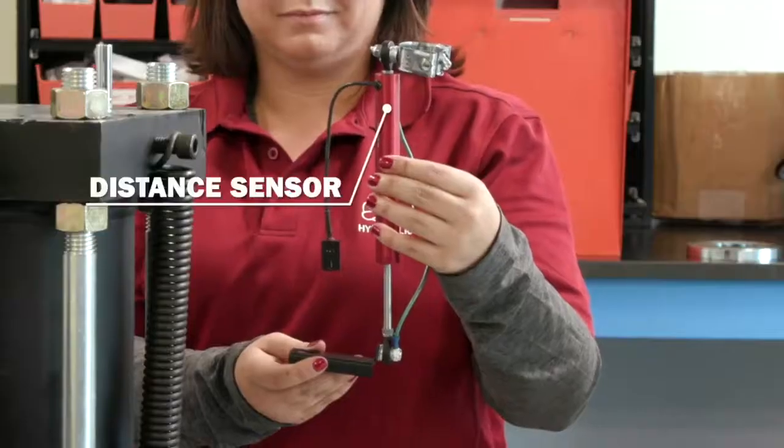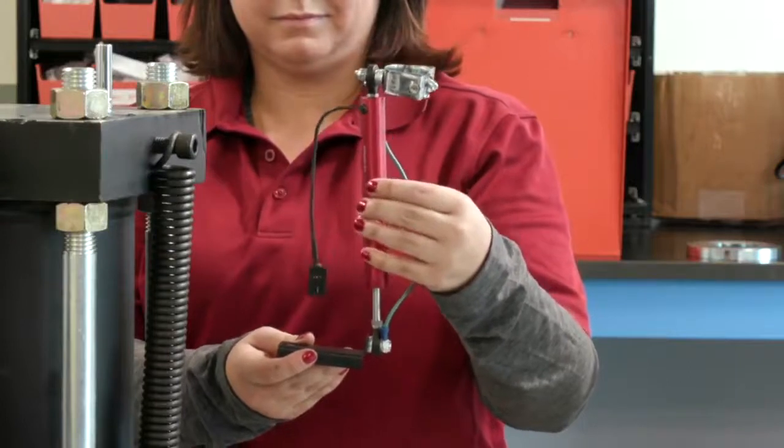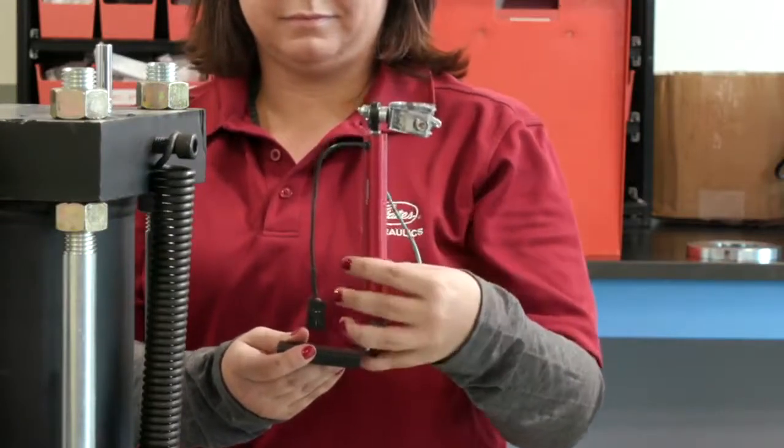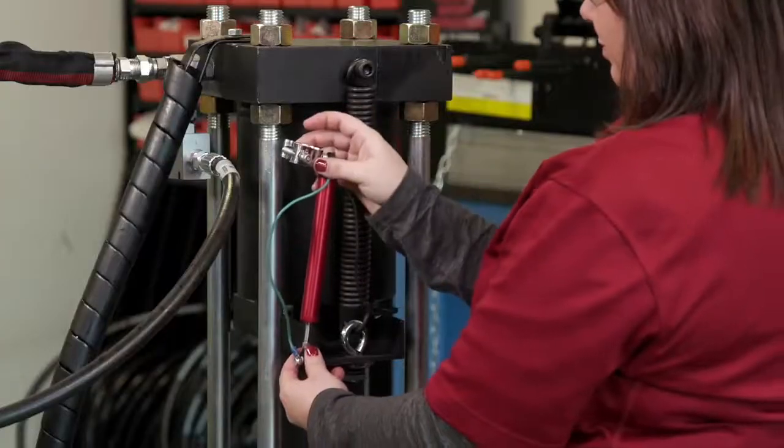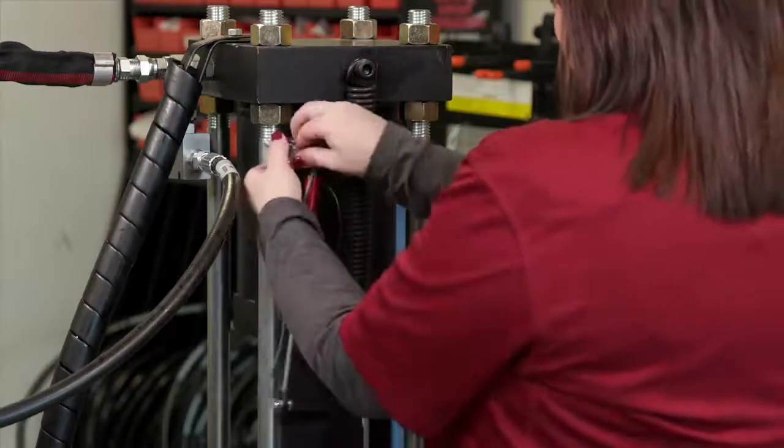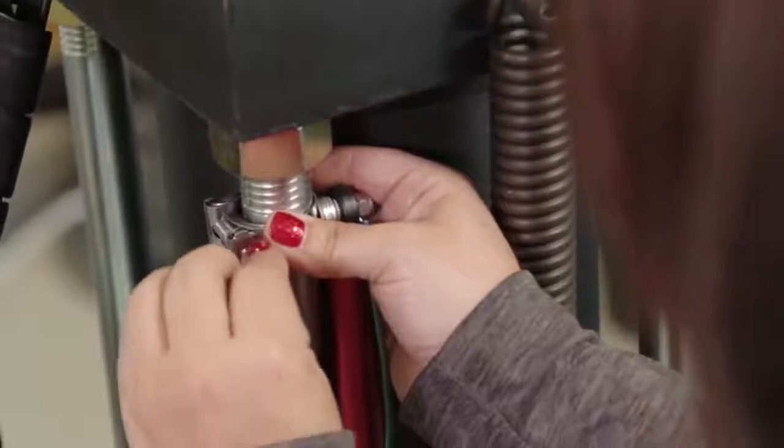Now we're going to install the distance sensor. This is the trickiest part of this conversion, so once you complete this step, you're more than 50% done. As you're standing in front of the crimper, you will be installing this distance sensor on the back left tie rod. Start by loosely attaching the hose clamp near the top of the tie rod.